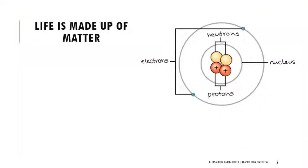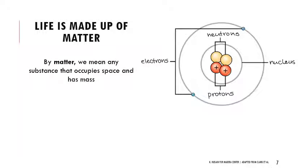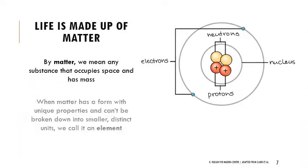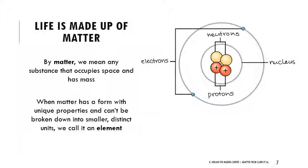Life is made up of matter, and what we mean by matter is any substance that occupies space and has mass. When matter has a form with unique properties and can't be broken down further, we're thinking about it in terms of elements. An element is specifically a type of matter with unique properties that can't be broken down into distinct unique units. There might be smaller components, but they don't have their own set of properties. The elements we talk about exist as atoms.